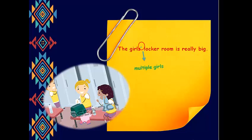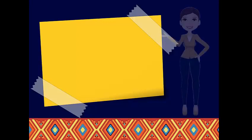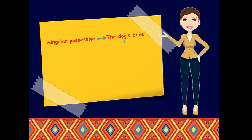If you've got one dog and it has one bone, here it will be the dog's bone, because here we have one dog. D-O-G, apostrophe, S.